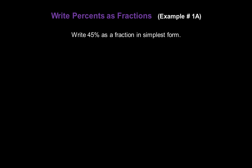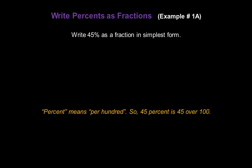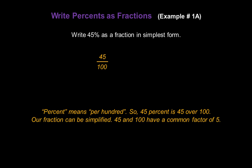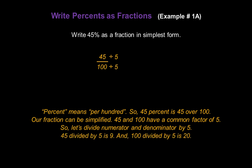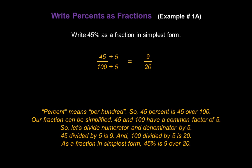Now let's write percents as fractions. Write forty-five percent as a fraction in simplest form. Percent means per hundred, so forty-five percent is forty-five over one hundred. This fraction can be simplified — forty-five and 100 have a common factor of five. So let's divide the numerator and denominator by five. Forty-five divided by five gives us nine, and 100 divided by five gives us twenty. So as a fraction in simplest form, forty-five percent is nine over twenty.